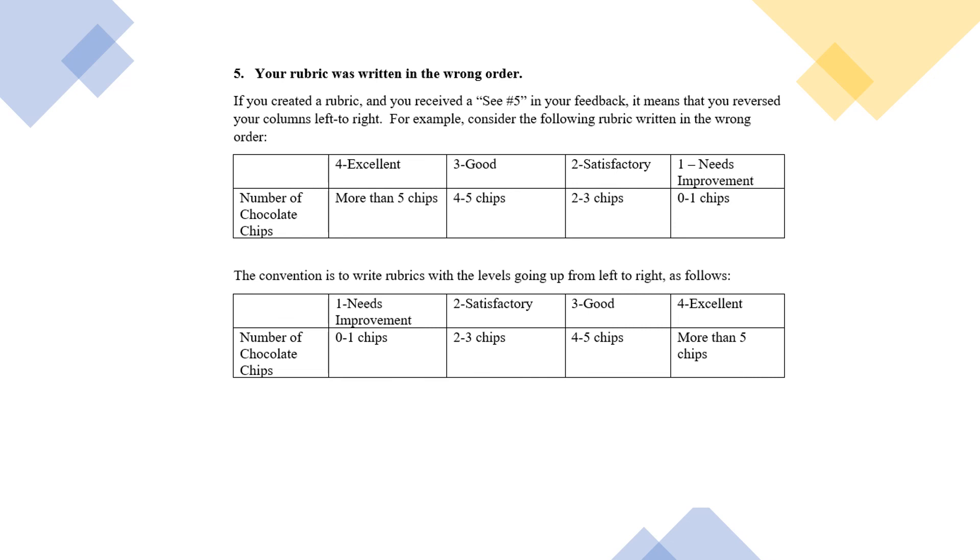Finally, if you received an error number five, it means your rubric was written in the wrong order. Many people write rubrics from four to one or from the highest number first to the lowest number, but the standard convention is to start from the left, go to the right, putting the lowest number on the left.